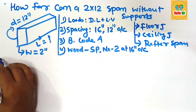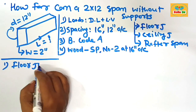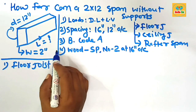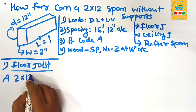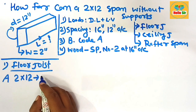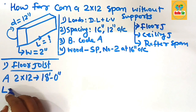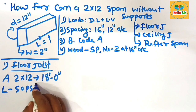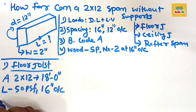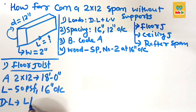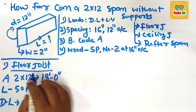Now, what will be the floor joist span for a 2x12 dimensional lumber? A 2x12 dimensional lumber as a floor joist can span a maximum distance of 18 feet 0 inches. The conditions are: total load should be 50 pounds per square foot, spacing between joists is 16 inches on center, deflection limit is L/360, using southern pine number two grade wood.